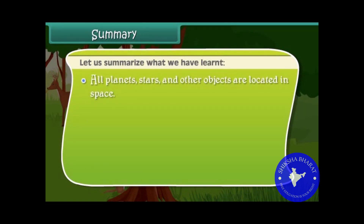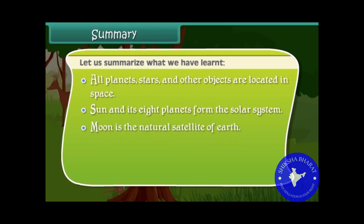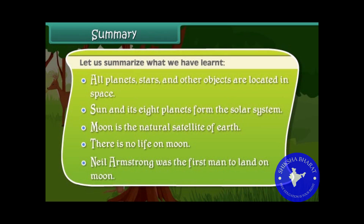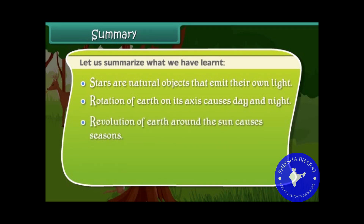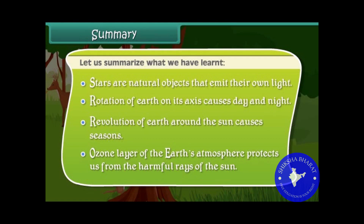Let us summarize what we have learned. All planets, stars, and other objects are located in space. The Sun and its eight planets form the solar system. The Moon is the natural satellite of Earth, and there is no life on the Moon. Neil Armstrong was the first man to land on the Moon. Stars are natural objects that emit their own light. Rotation of Earth on its axis causes day and night. Revolution of Earth around the Sun causes seasons. The ozone layer of Earth's atmosphere protects us from the harmful rays of the Sun.